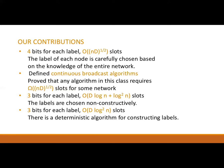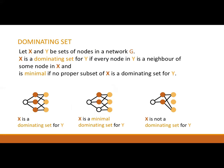Before that, I need a couple of definitions. A set of nodes X is said to be a dominating set for a set of nodes Y, if every node in Y has a neighbor that is in X. For example, in the first and second networks, the set of brown nodes is a dominating set for the set of orange nodes. However, this is not true in the third network, since the middle orange node has no brown neighbor. X is a minimal dominating set for Y if it is a dominating set for Y, and no proper subset of X is a dominating set for Y.